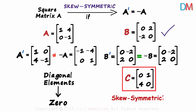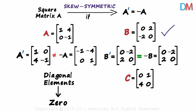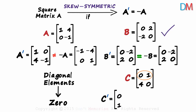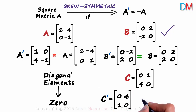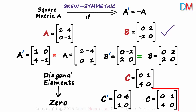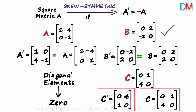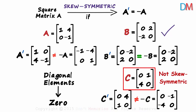What about matrix C? Is it skew symmetric? It is a square matrix and its leading diagonal elements are zero, so it may be skew symmetric. Finding C transpose: the first row is written as the first column and the second row as the second column. For negative C, negating each element gives: 0, minus 1, minus 4, 0. Clearly these two matrices are not equal, so matrix C is not skew symmetric.